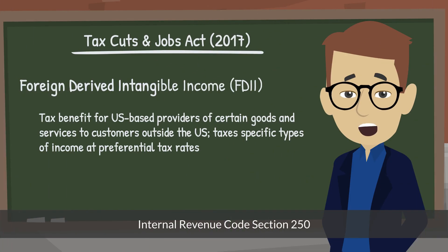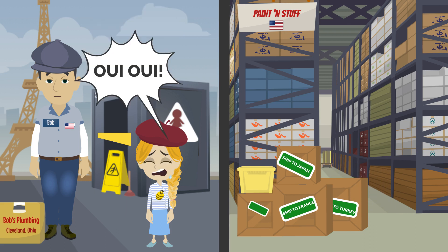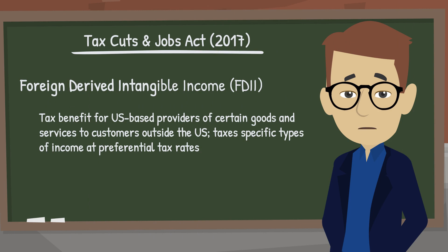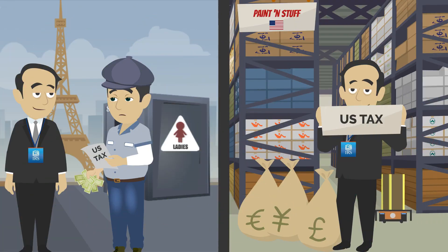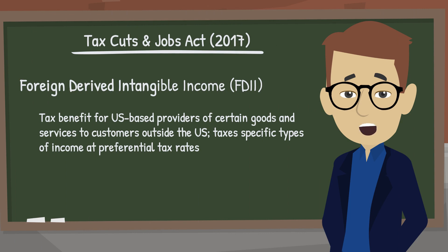Third, the foreign-derived intangible income provision, FDII, provides a tax benefit for U.S. corporations that sell certain types of goods and services to customers or for use outside the United States. Export subsidies generally are not permitted under international trade agreements, so we won't call it that. But FDII basically applies a lower tax rate to certain types of income a domestic corporation earns from selling goods or providing services to qualifying customers outside the United States. Treasury and the IRS have issued detailed regulations governing how you determine if you've sold the right type of goods or provided the right type of service to the right type of customer in the right kind of place.